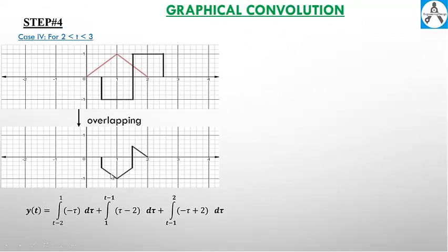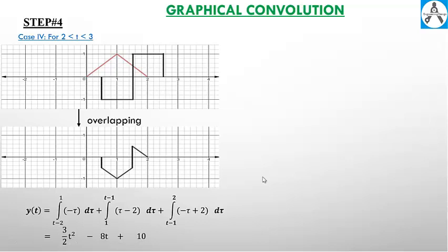In the first part slope is negative one and intercept is zero, so we have equation minus tau with limits from t minus two to one. The second part has slope positive one and intercept negative two, with limits from one to t minus one. The third part has slope negative one and intercept plus two, with limits from t minus one to two. After solving this integral we have the result y of t.